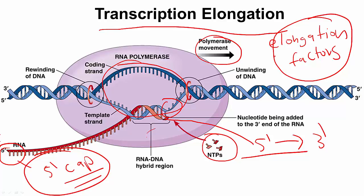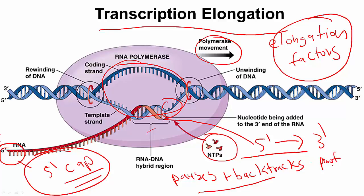Elongation is not a continuous process. The RNA polymerase pauses and even backtracks during its journey. One of the major reasons why is because the RNA polymerase has proofreading activity. Proofreading is when mistakes are corrected, just like when you misspell a word and you need to hit the delete key to fix your typo. Sometimes the polymerase pauses or even backtracks to fix base pairing mistakes, so the major reason for these pauses and backtracking is to fix these errors.